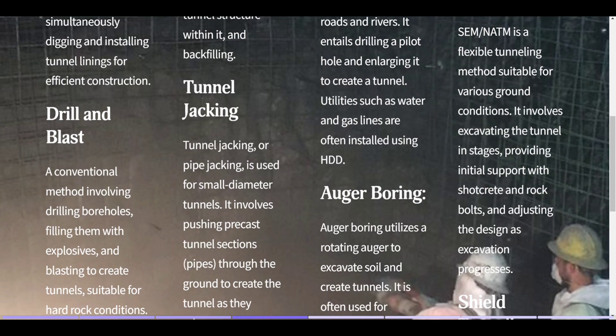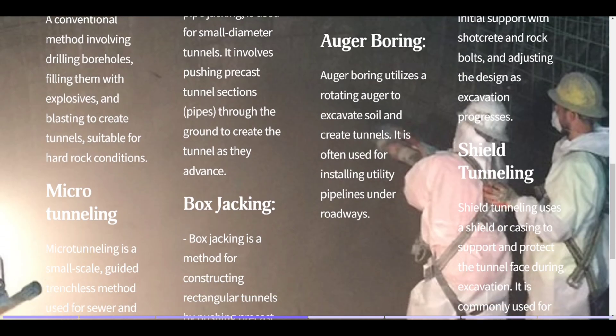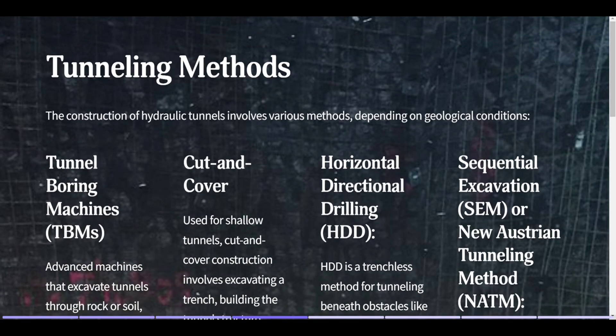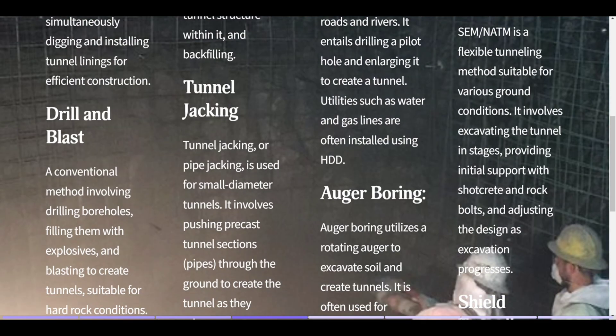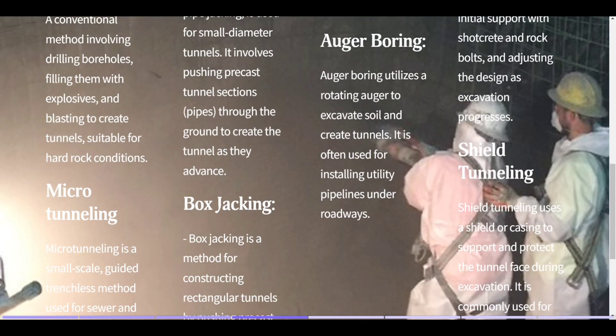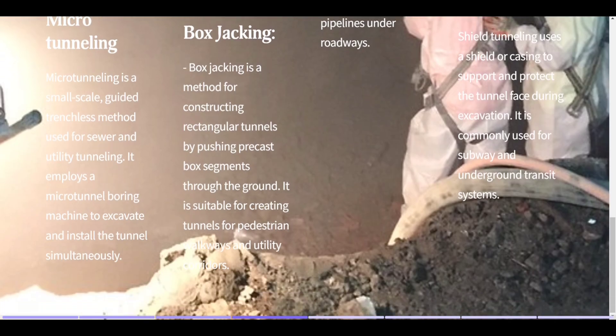Auger Boring utilizes a rotating auger to excavate soil and create tunnels, often used for installing utility pipelines under roadways. The Sequential Excavation Method / New Austrian Tunneling Method (SEM-NATM) is a flexible method suitable for various ground conditions, involving excavating in stages, providing initial support with shotcrete and rock bolts, and adjusting design as excavation progresses. Shield Tunneling uses a shield or casing to support the tunnel face during excavation, commonly used for subway and underground transit systems.